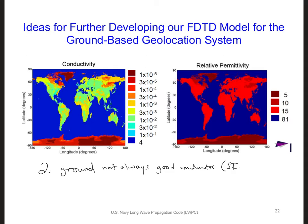This relates to the SIBC formulation. Third, we decided that we need the VLF transmitters to periodically transmit at different frequencies so that at least some signals can reliably be received at any location, even when there is a null for a specific frequency. As a result, we need our FDTD grid to work for different frequencies, so for different FNOTs.